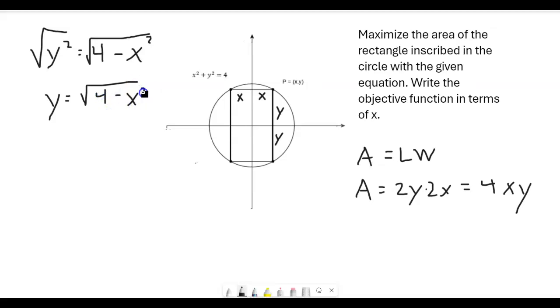And that gives us our substitution that we need to go back in here and get this objective function just in terms of x. So the objective function is finally going to be area is equal to 4 times x times the square root of 4 minus x squared. And again, what we did was we just replaced this y with the square root of 4 minus x squared because we came up with that using the constraint equation.